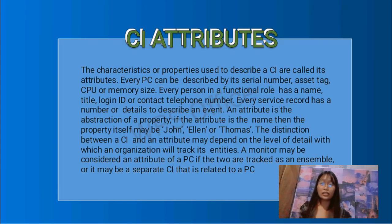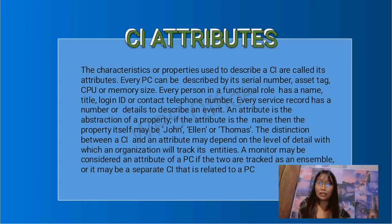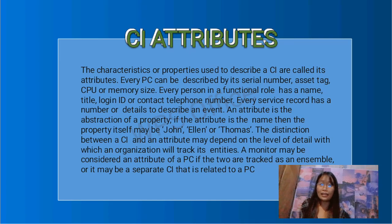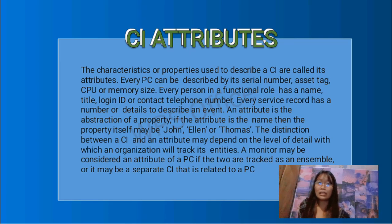CI Attributes: The characteristics or properties used to describe a CI are called its attributes. Every piece of equipment can be described by its serial number, asset tags, CPU, or memory size. Every person in a functional role has a name, title, login ID, or contact number. Every service record has a number or title to describe an event. An attribute is an abstract property — if the attribute is 'name,' then the property value will be John, Ellen, or Thomas. The distinction between a CI and an attribute may depend on the level of detail with which an organization tracks entities. A monitor may be considered an attribute of a PC when the two are tracked as an ensemble, or it may be a separate CI that is related to a PC.